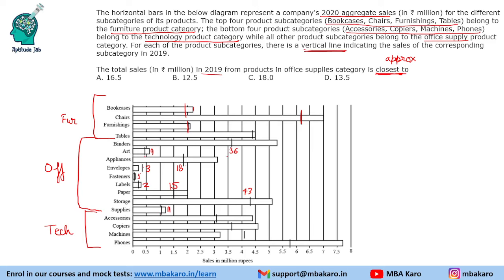Adding these up: 36 plus 9 is 45, plus 15 is 60, plus 6 is 66, plus 18 is 84, plus 54 gives 138, or 13.8. Our total comes to 13.8, and the closest answer option is 13.5. We may have slightly overestimated some values — storage could have been 42.5, another could have been 10.5. So the approximate answer is 13.5.